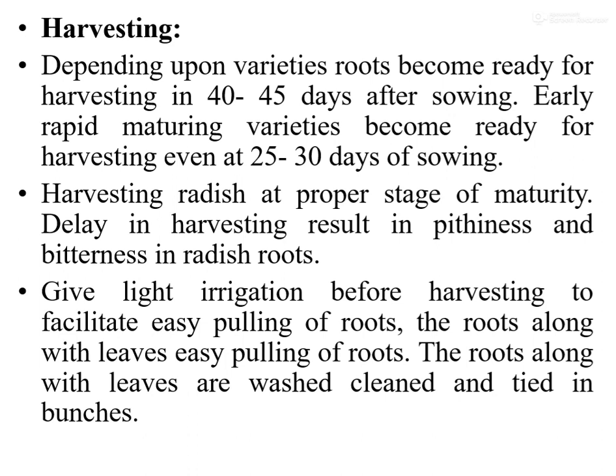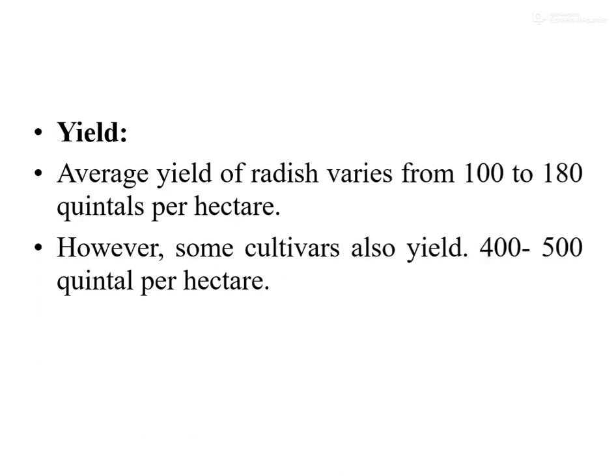After light irrigation, the radish roots are harvested by pulling along with their leaves, washed in running water, tied in small bunches, and sent to the market. The average yield of radish ranges from 100 to 180 quintals per hectare. For higher yielding cultivars, the range is 400 to 500 quintals per hectare.